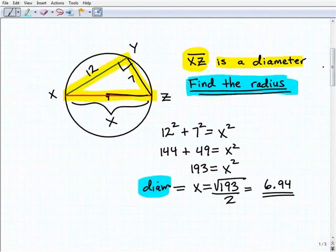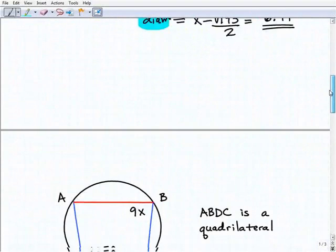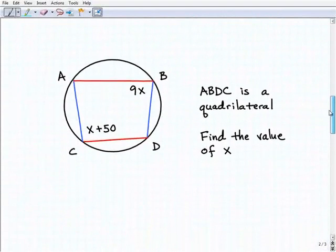So once again, this problem is not difficult once you could apply these theorems that we learned. The whole key here was knowing that this particular inscribed angle was a right angle. That was a theorem that we learned from the lesson. Let's take a look at our second problem.